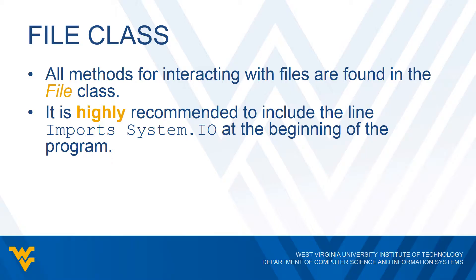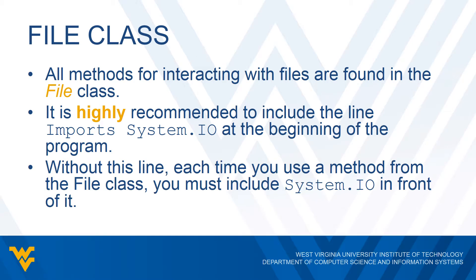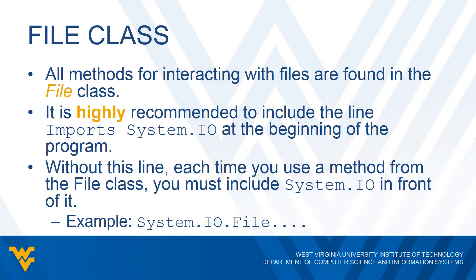This is similar to how we import library files in C or C++, or packages in Java. Now, if we don't include this import line, we can still use methods from the File class, but the problem is we would have to include 'System.IO' in front of every single method. For example, we'd have to write something like 'System.IO.File.WhateverMethod'. It's a lot easier to just include 'Imports System.IO' at the beginning of our program.